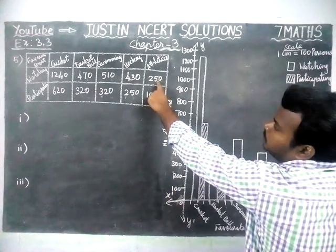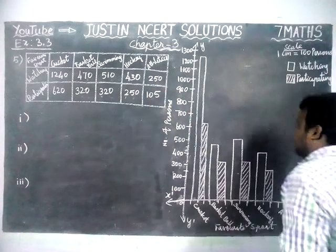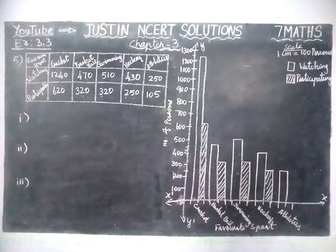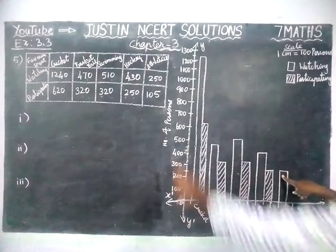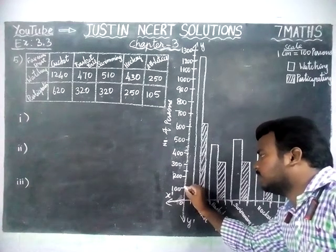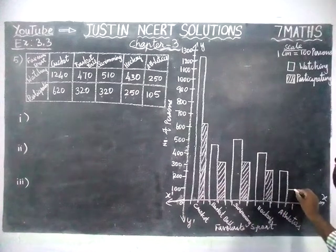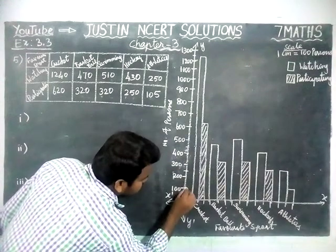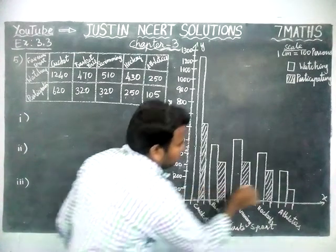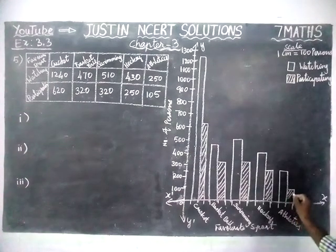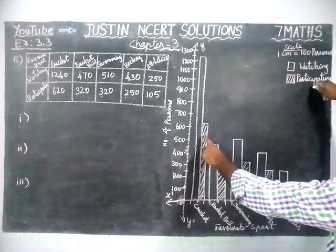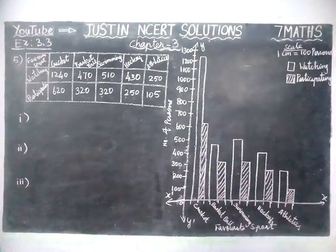Now, athletics. Watching members: 250, participating: only 105. For watching members 250, we already have that marking, so we use the same. For participating: 105 — after 100, the first line itself is 110. So in between 100 and 110, we draw the bar at 105. We show the differentiation using the cross line. So the empty space represents watching members, and the crossed part represents participating members. We have drawn the double bar graph.